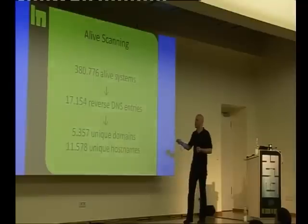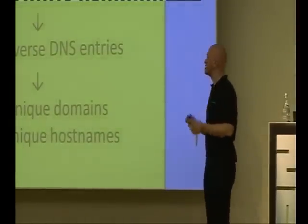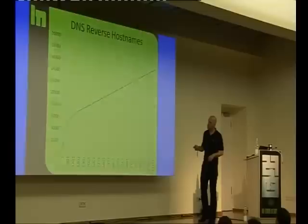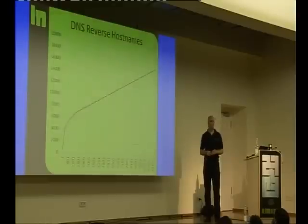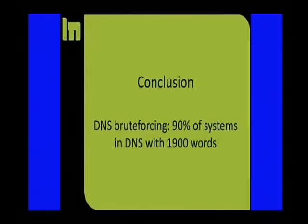I also did reverse DNS entry analysis to see what hostnames people supply, compare to IPv4, and build an effective word list. About 1,000 to 1,200 active hostnames are needed. The basic algorithm: DNS brute-force on live systems → get new DNS entries → put those into alive scan → get new live systems → feed back into DNS brute-forcing, and so on, until all systems are found. By DNS brute-forcing alone you'll get maybe 90% of systems — but by systems I mean servers, not necessarily routers.